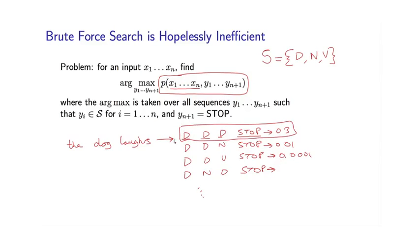The problem with this approach is that the number of possible sequences grows very quickly with the length of the sentence. So in this particular case I have 3 to the power 3 possible sequences because there are three choices here, the choice of the first tag, the second tag, and the third tag.